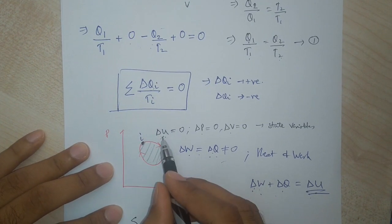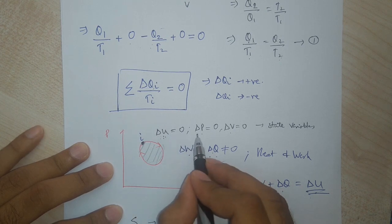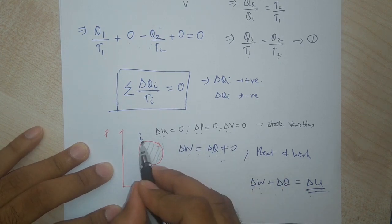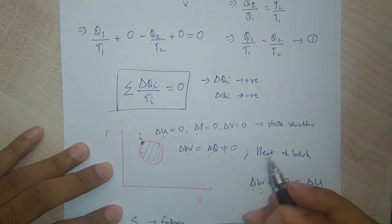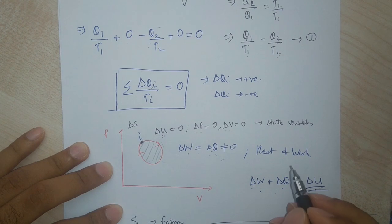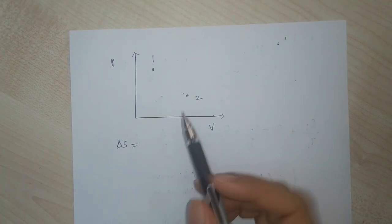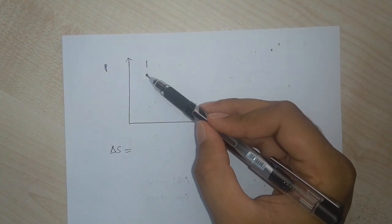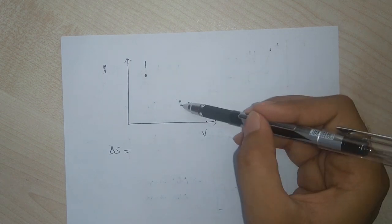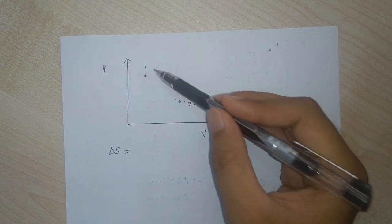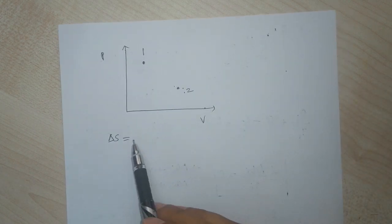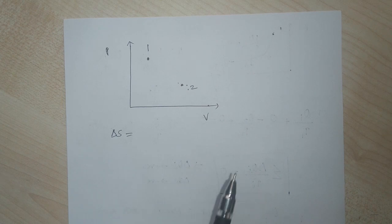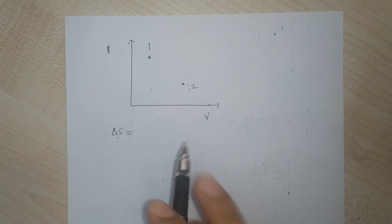Entropy is a state variable. Just as changes in internal energy, pressure, and volume depend only on where you are on the PV diagram, ΔS is also a state variable. If a gas goes from state 1 to state 2, the change in entropy ΔS is independent of the path taken. It only depends on the initial state and the final state of the gas.